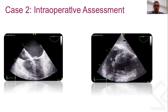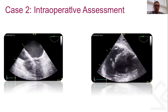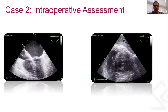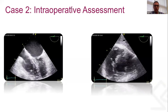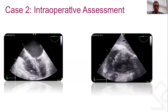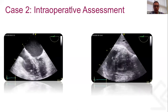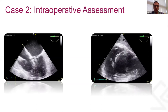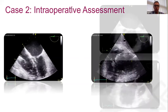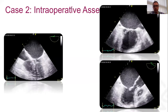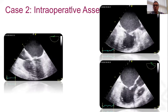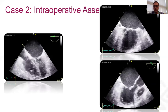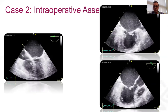Starting our intraoperative assessment, the four-chamber view shows normal biventricular function. We can appreciate the really large left atrium and also an enlarged right atrium. In the transgastric mid-papillary view, we again see normal biventricular function. Moving through the multiplane assessment and rotating to evaluate all walls including the mitral valve, the long-axis view reveals features consistent with rheumatic mitral valve disease, including thickened leaflets with restricted mobility, particularly of the posterior leaflet.